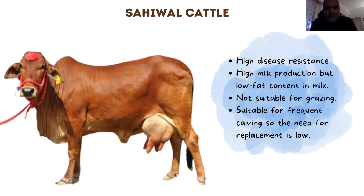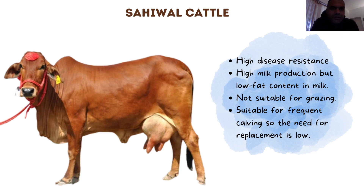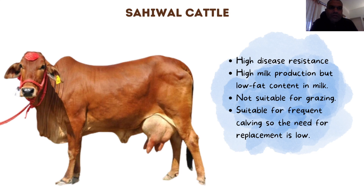Sahiwal also has high disease resistance and high milk production, but the milk it produces is relatively low in fat compared to others like Red Sindhi. Fat is important for the production of butter and certain kinds of cheese, so it depends on what the milk is going to be used for. It is not suitable for grazing and is better fed in one place.